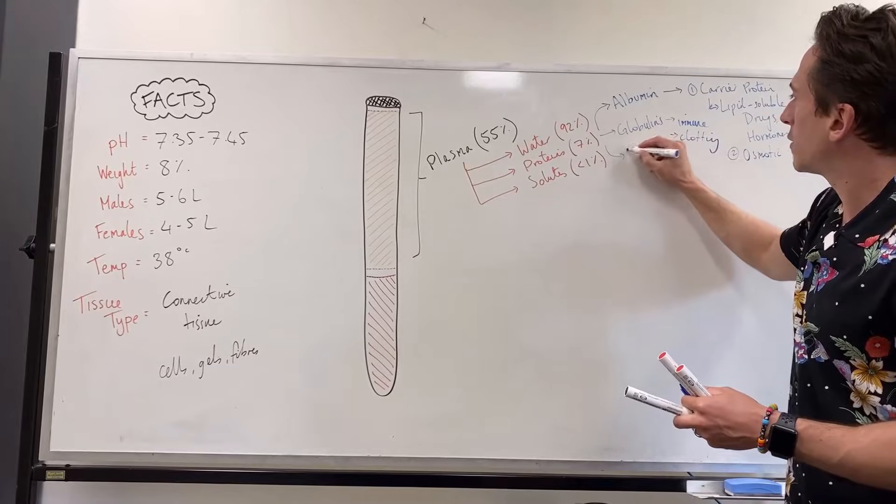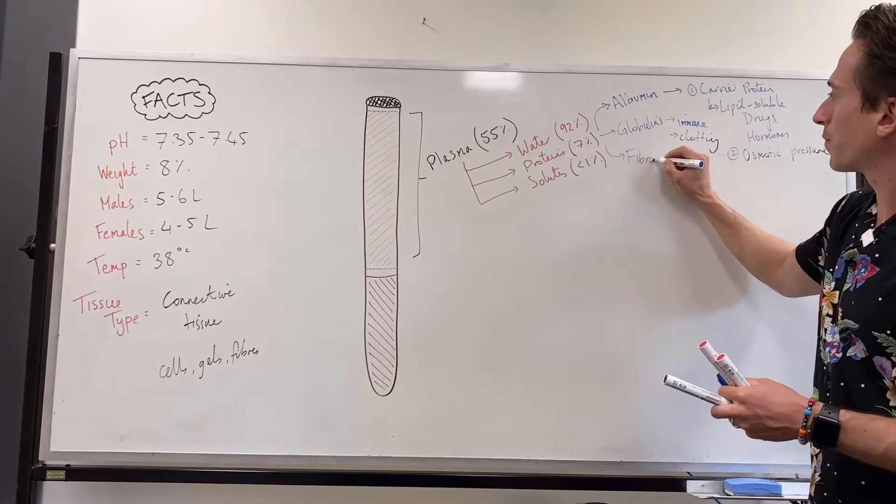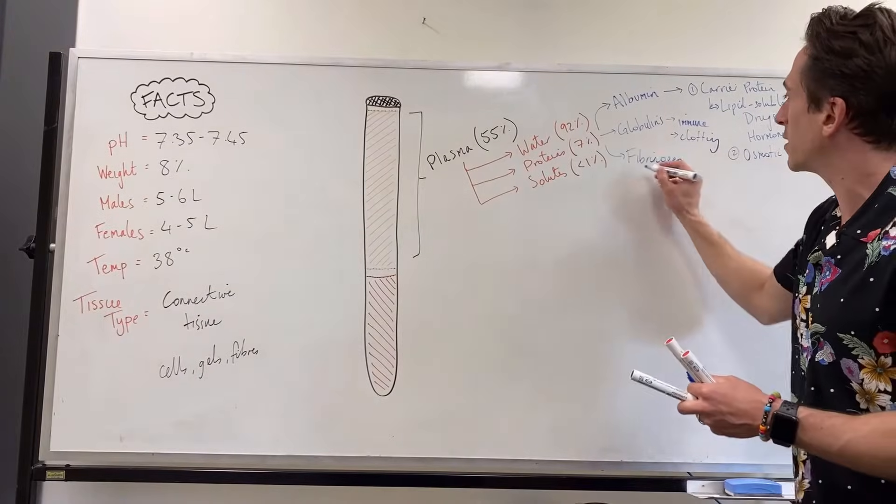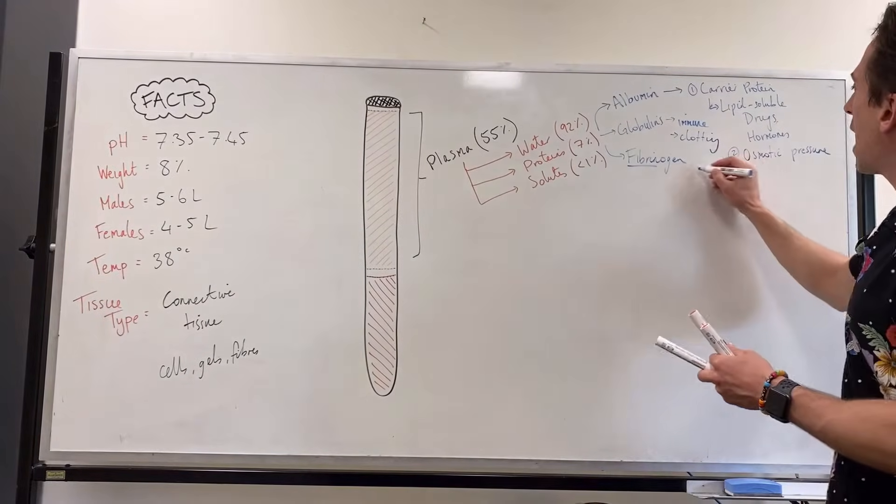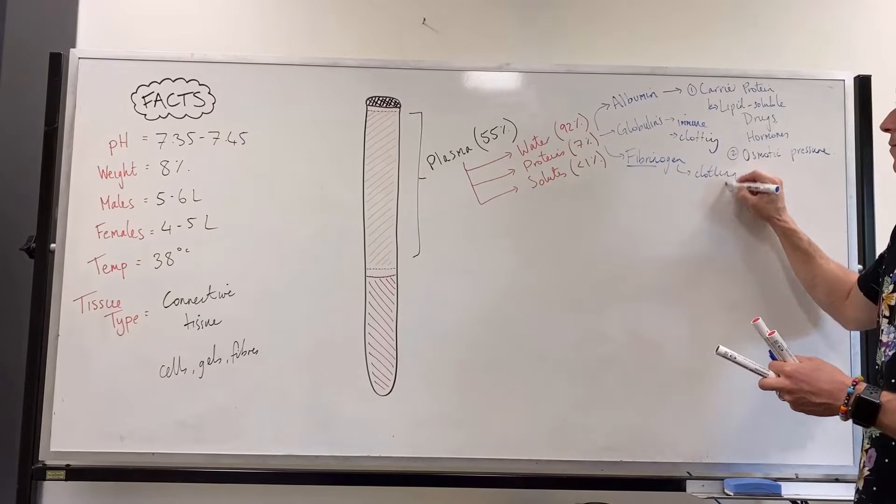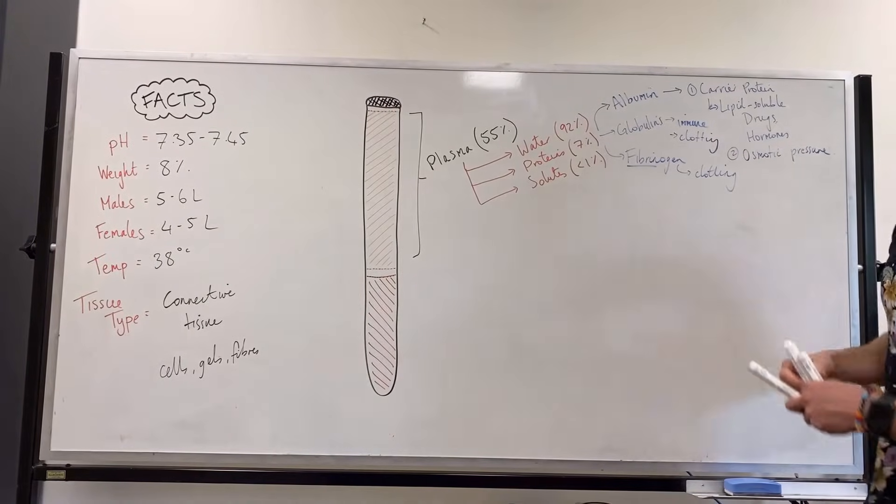And then the third protein is fibrinogen. And fibrinogen is an inactive protein that needs to be activated into fibrin. And it's involved in clotting as well, in the clotting cascade.